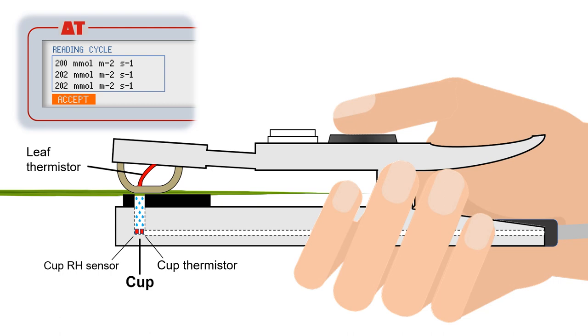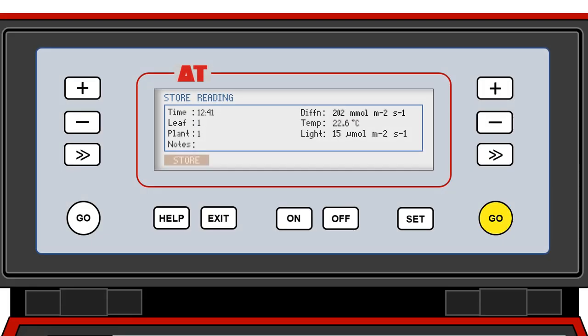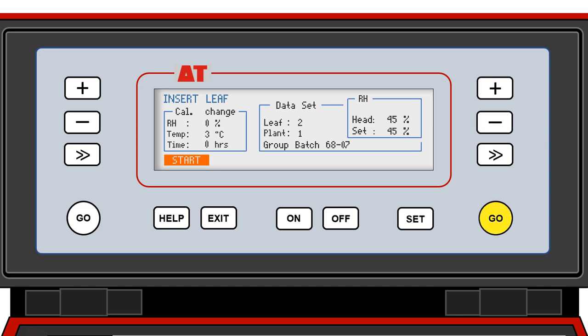Once accepted, the user stores the reading by pressing the Go button. Text notes can be added with the full-size keyboard. Pressing the button again enables the user to start measurement on another leaf.